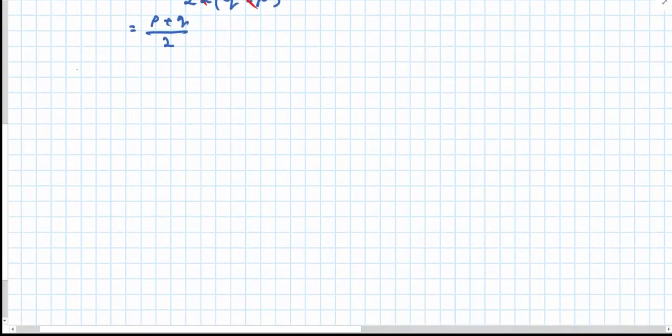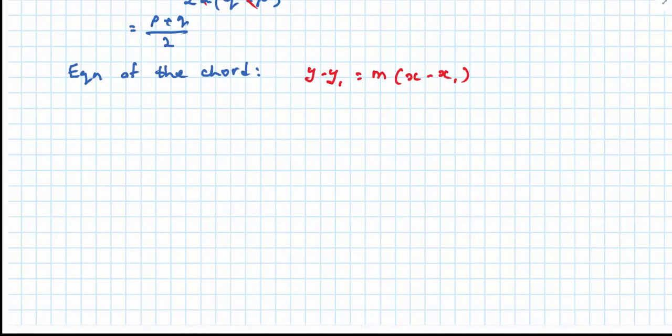I'm going to find the equation of the chord. Equation of the line: y minus y1 equals m times x minus x1. Substitute my point—I'm going to use point p. So y minus ap squared equals p plus q over 2 times x minus 2ap.